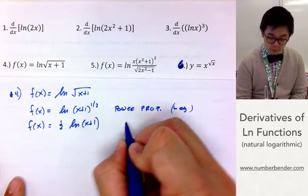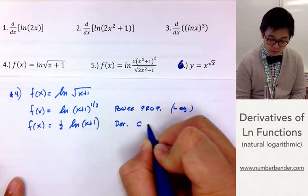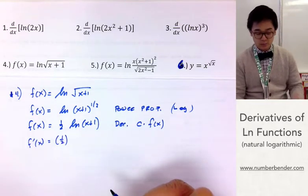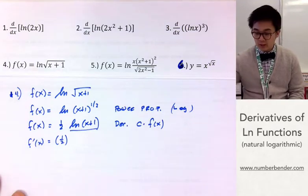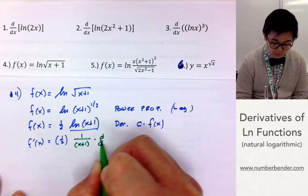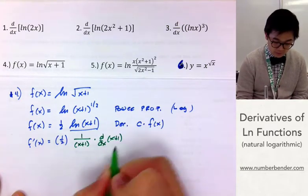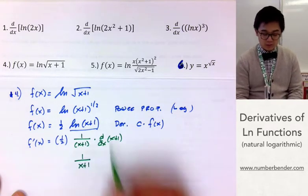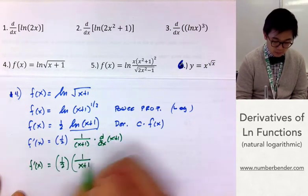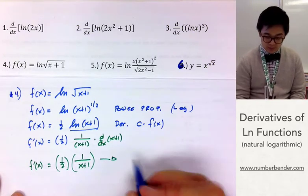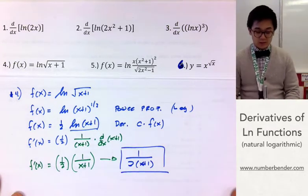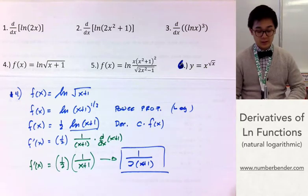By doing so, we are going to use the derivative rule for a constant multiplied by a function. We put 1/2 aside and take the derivative of ln(x + 1), which is 1 over (x + 1) times d/dx of (x + 1), which is simply 1. So f′(x) is simply 1/2 multiplied by 1 over (x + 1), which simplifies to 1 all over 2(x + 1).